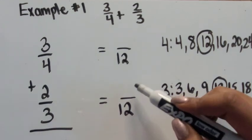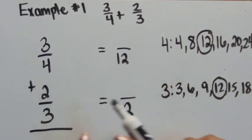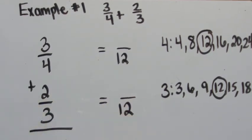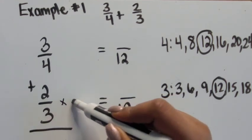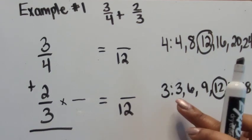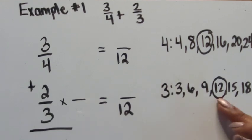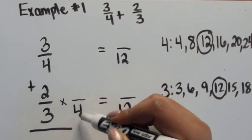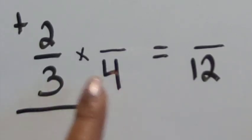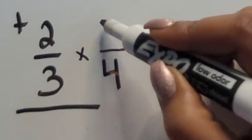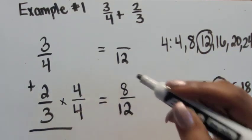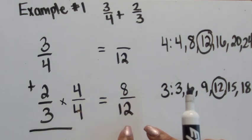Now we need to figure out what the new numerators are going to be. If the denominator was changed, then the numerator will change as well. Starting with two-thirds: three times what number equals 12? Counting the multiples of three, four groups of three equals 12, so three times four is 12. If we multiply the denominator by four, we need to multiply the numerator by four as well. Three times four is 12, and two times four is eight. So two-thirds is equivalent to eight-twelfths.